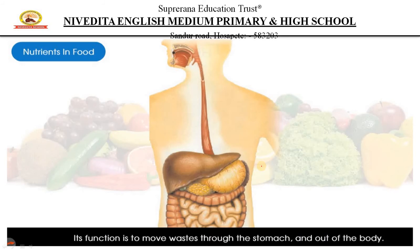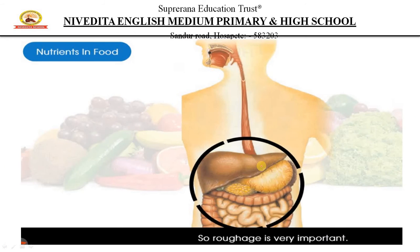That wastage has to be moved out of the body, and that is done by roughages. Roughages help us to move the waste to the stomach and out of the body, which is why roughages are very important.